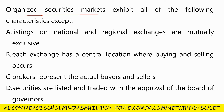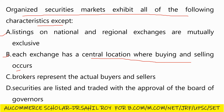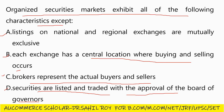Our next question: organized securities markets exhibit all of the following characteristics except — Option A: listing on national and regional exchanges are mutually exclusive; Option B: each exchange has a central location where buying and selling occurs; Option C: brokers represent actual buyers and sellers; Option D: securities are listed and traded with the approval of the board of governors. The correct answer is Option A.